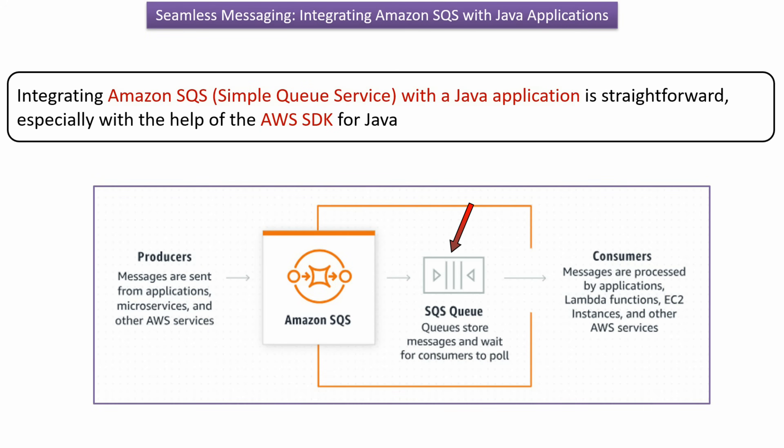Here you can see the SQS queue, which will store the messages and wait for consumers to poll. We will write a producer which will send messages to the SQS queue, and we will write a consumer which will consume the messages from the SQS queue and process them.